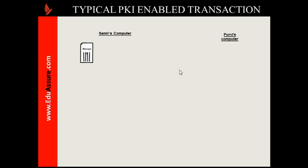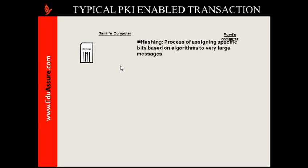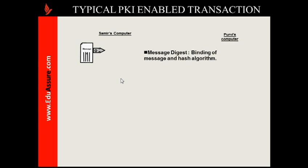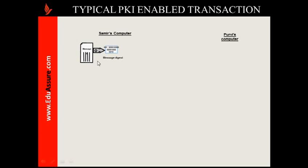This is the message which needs to go from Samir's computer to Purvi's computer. An algorithm is a mathematical model for encryption — the method used for encryption is an algorithm. Hashing is an algorithm by which a unique value is calculated based on the content of a message; hashing algorithms include SHA and SHA1. The first thing done on the message is that a message digest is created by applying the hashing algorithm on the message, and this message digest is a unique value based on the content of that particular message.